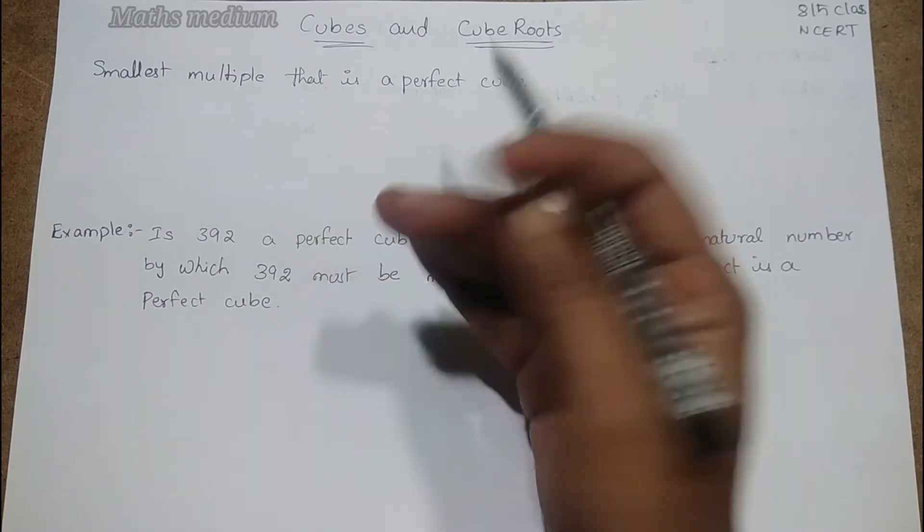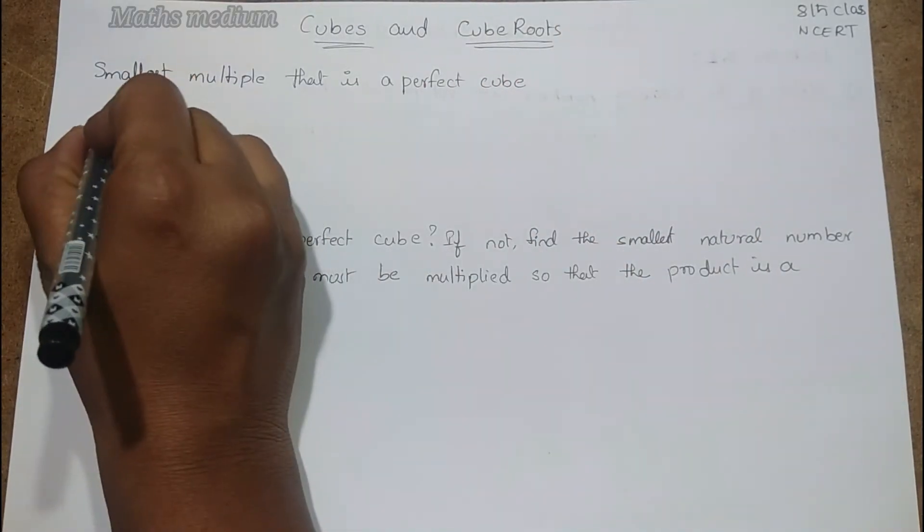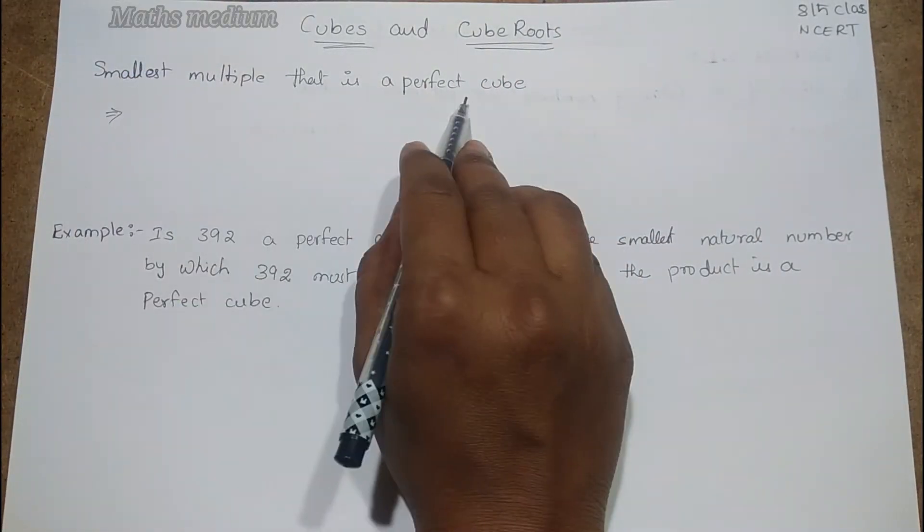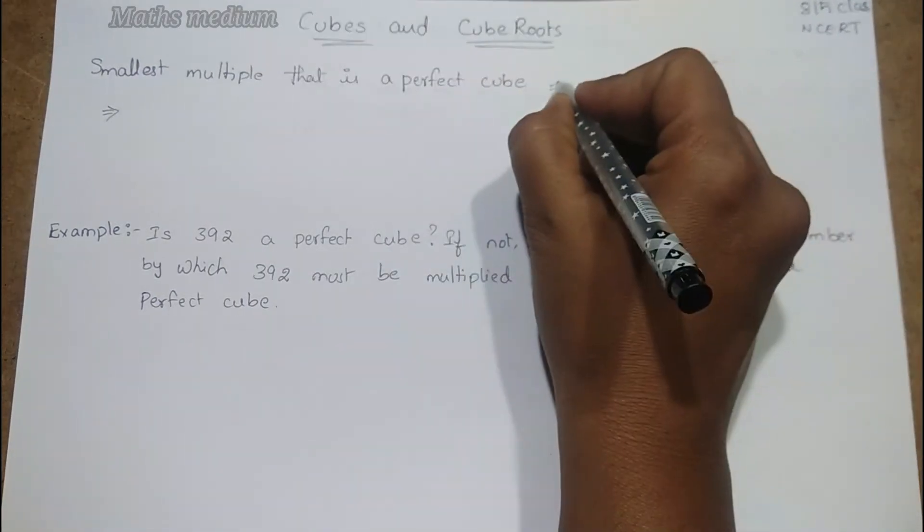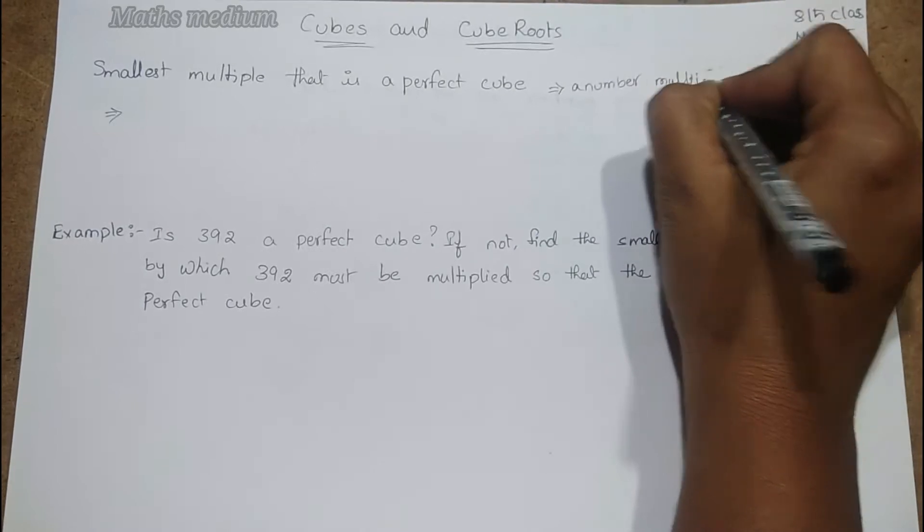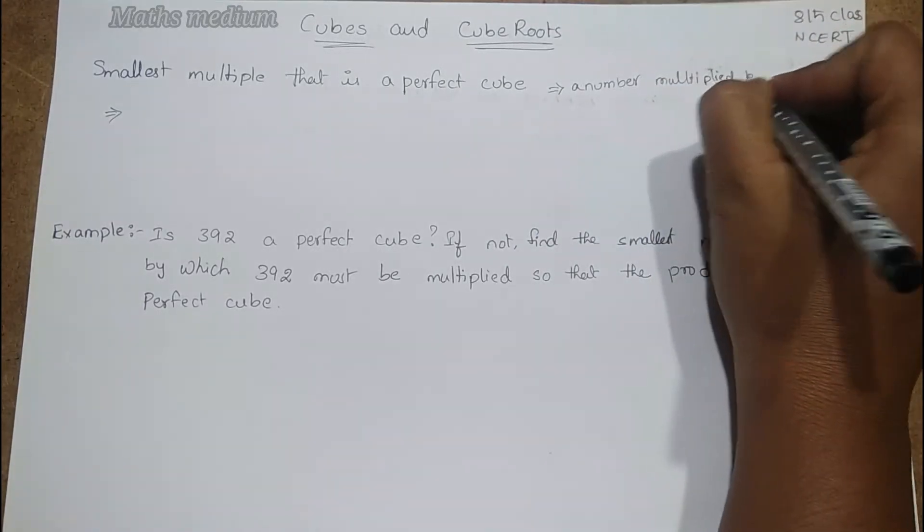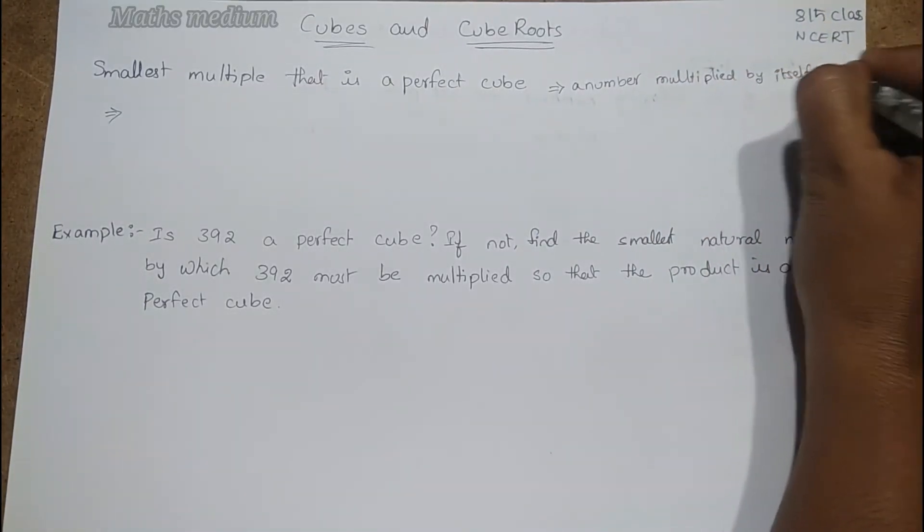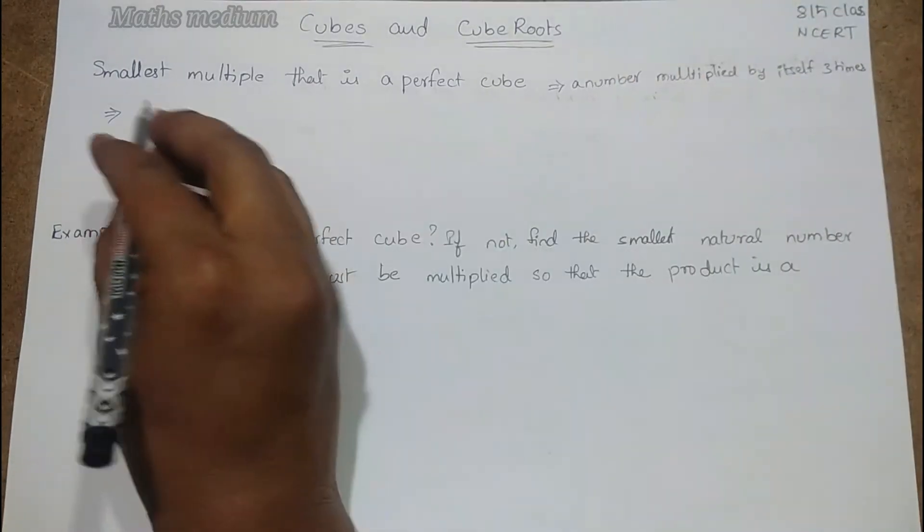Let's start. Smallest multiple that is a perfect cube - we know that a perfect cube is nothing but a number multiplied by itself three times, right? Now if you take any number, for example I am taking 128.